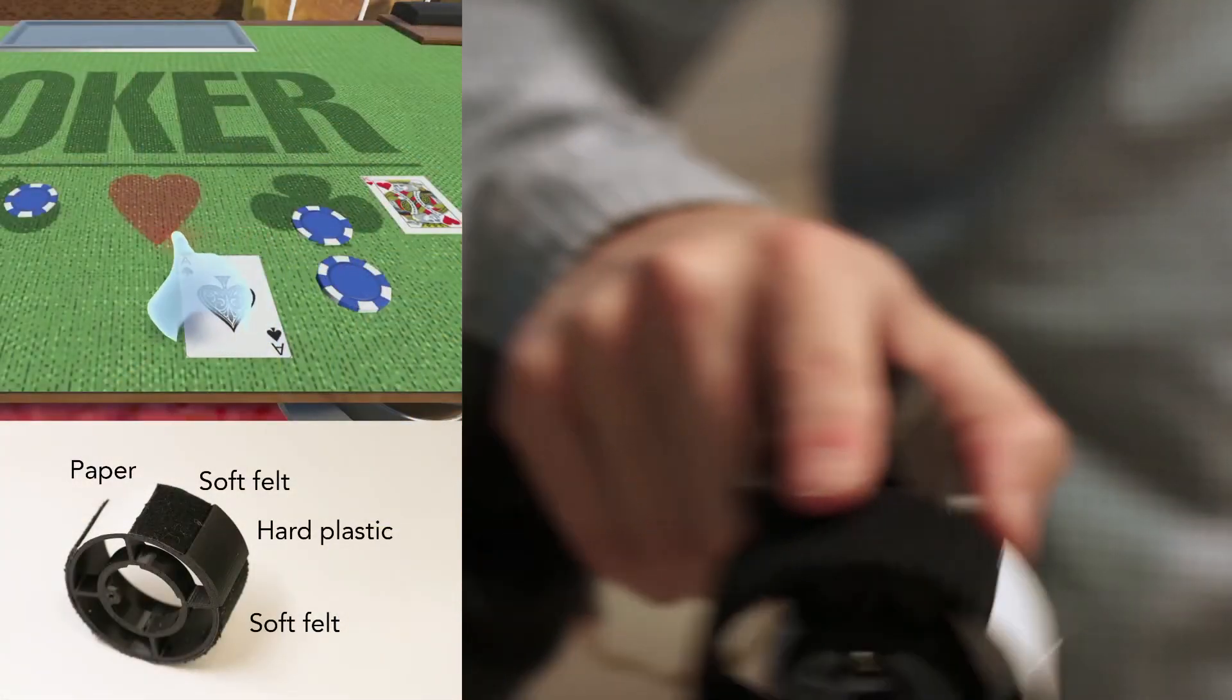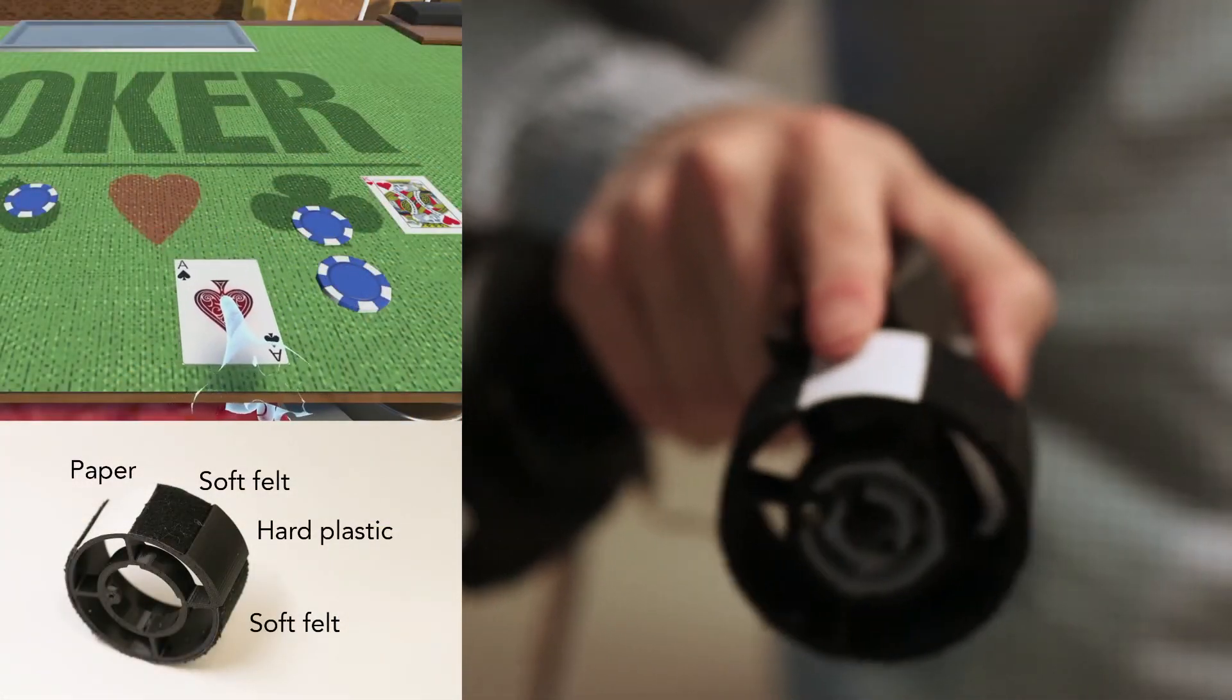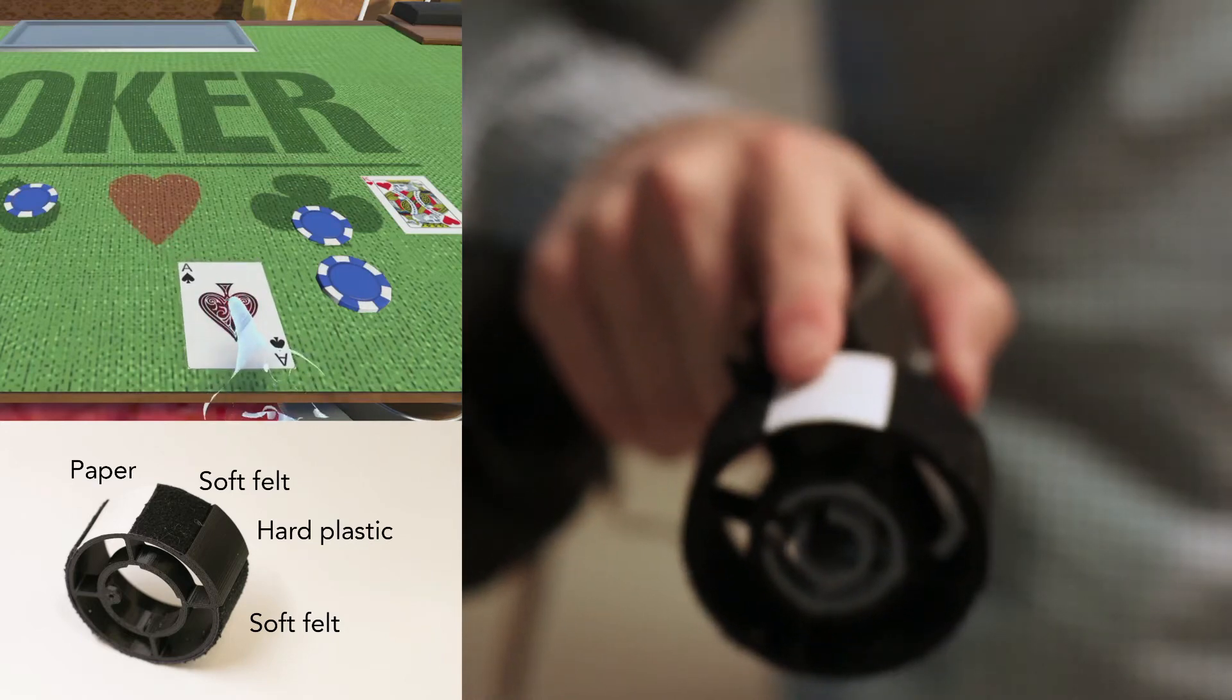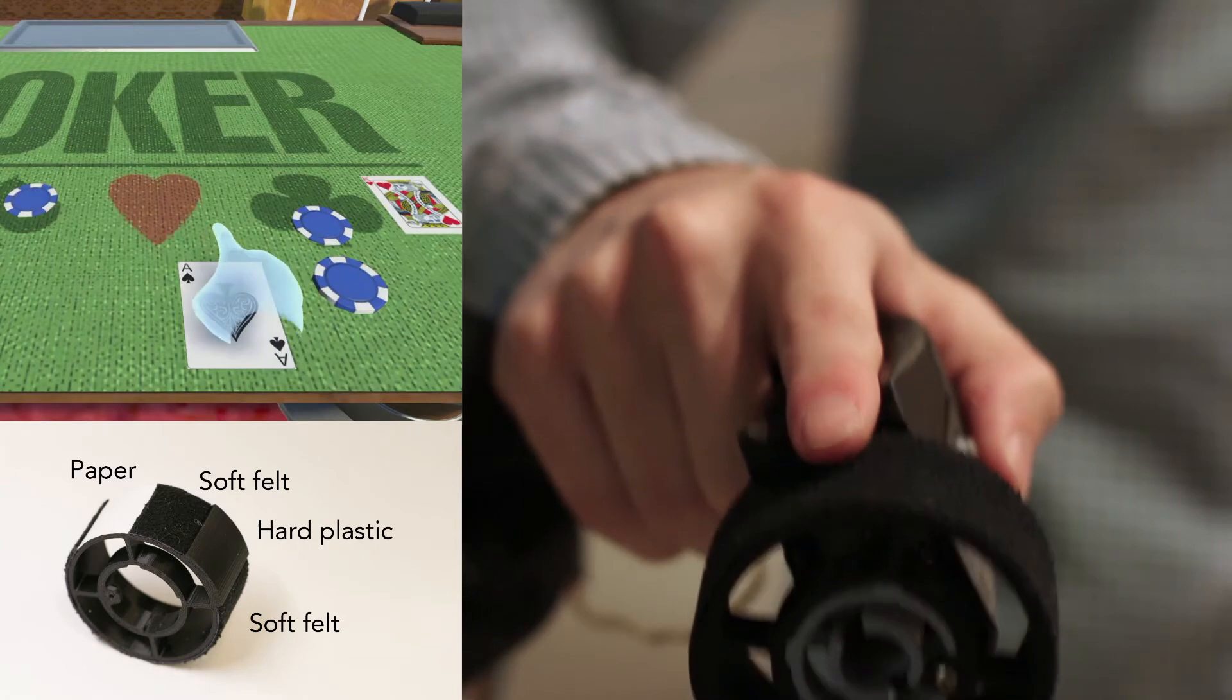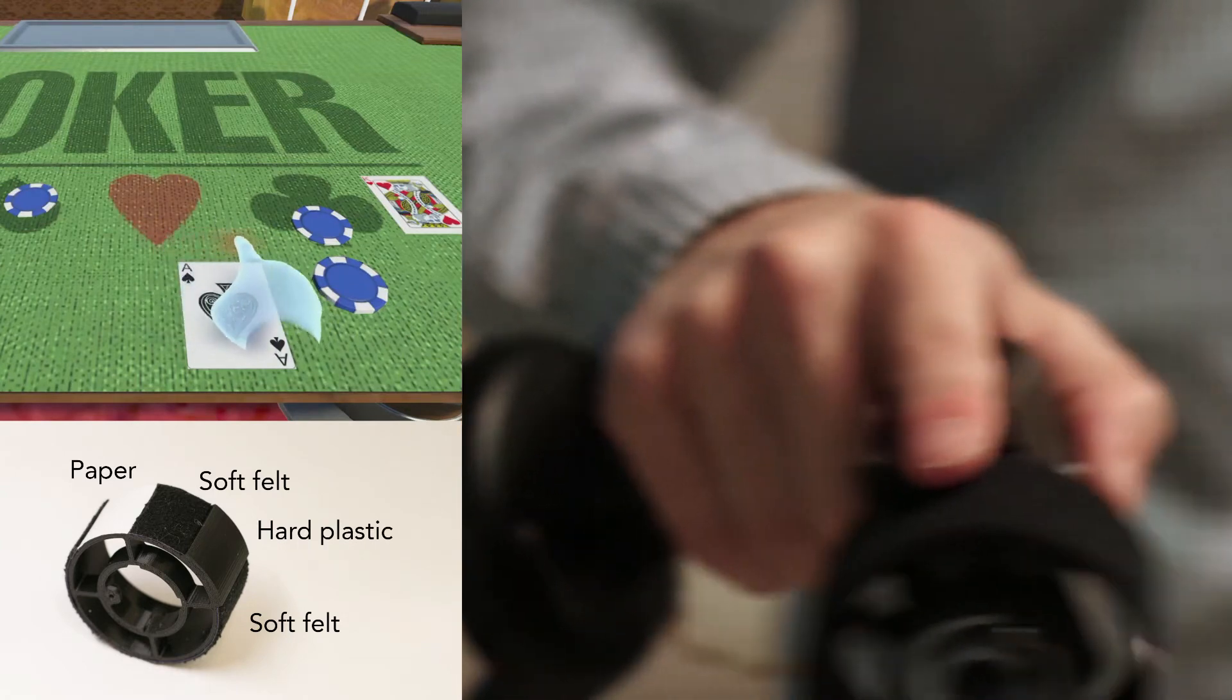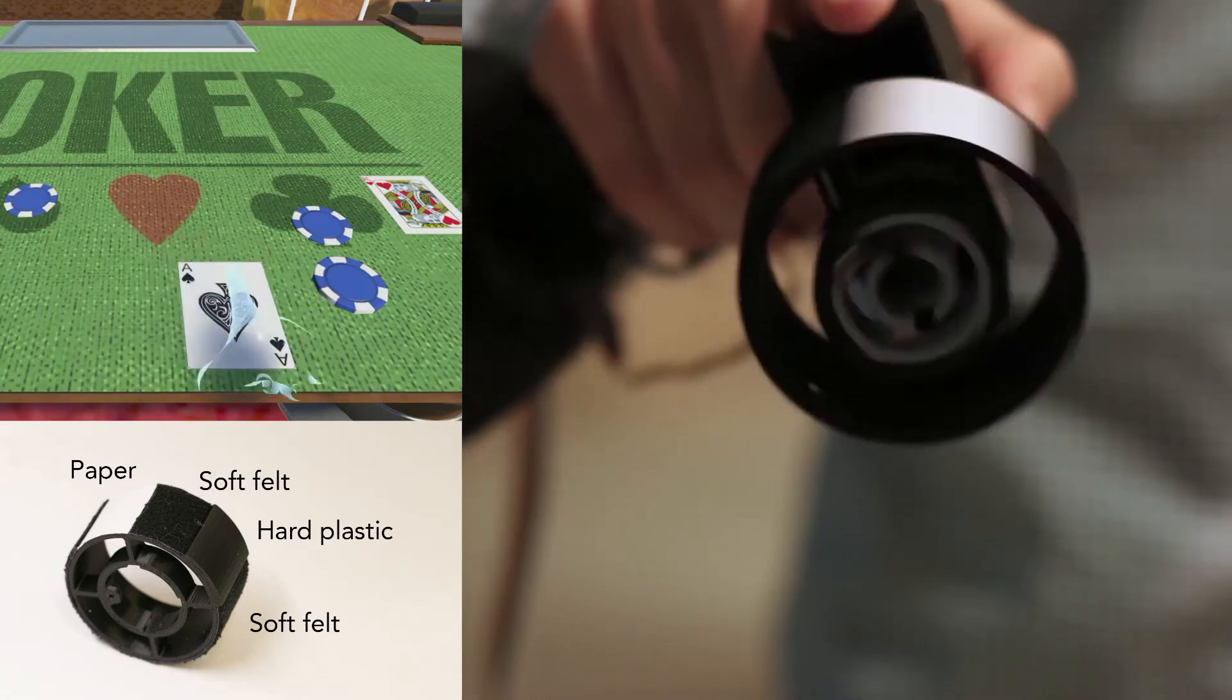For example, here we show a card table using a wheel with various textures and edges. When the user moves from one surface to another, our rendering engine positions the wheel so that the appropriate texture lies beneath the finger and that the edge is felt in the correct spot.